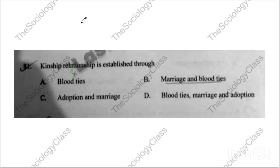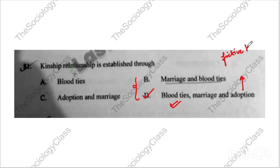Question number eighty-one: 'Kinship relationship is established through what?' Options: blood ties; marriage and blood ties; adoption and marriage; blood ties, marriage, and adoption. There may be some confusion between B and C, but the correct answer is D — because adoption also comes under kinship. If you adopt a child, they are added to blood ties as well, which is also in our Constitution. Apart from this, there is also fictive kin — for example, someone who is not a blood relation but is called 'bhaiya' in a social context. Fictive kin questions can also appear in the exam.